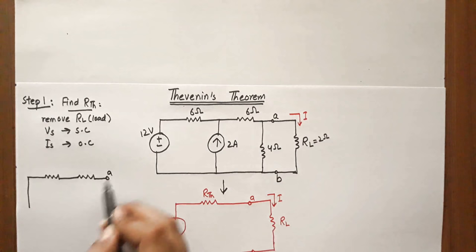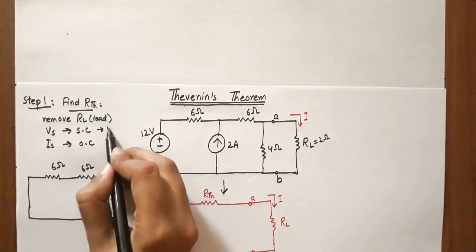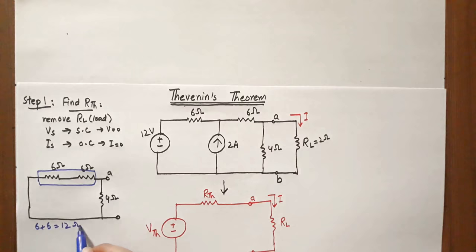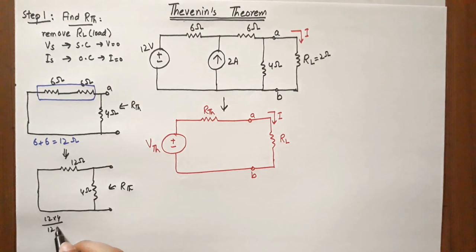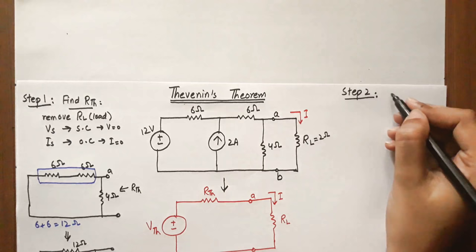With terminal A, there is a 4 ohm resistance, and terminal B. With V equal to 0 and I equal to 0, all sources are zero. There are two 6 ohm resistances in series, giving 12 ohms, and this 12 ohm resistance is in parallel with the 4 ohm resistance, giving 3 ohms. This is our one equivalent parameter R_thevenin.